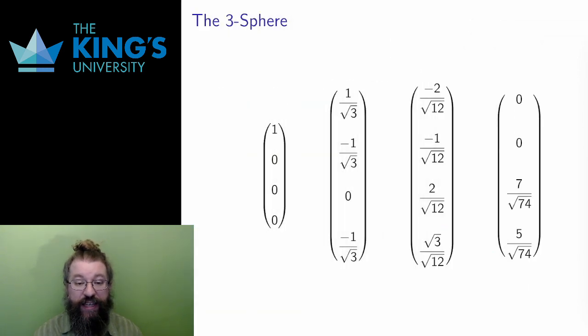With algebraic access, I can actually work with this sphere, talk about it. Consider these four vectors in R4. If I take the components of these vectors, square them, and add them up, I get exactly 1. In the first, this is just 1 plus 0 plus 0 plus 0 equals 1. In the second, the squares are all 1 thirds, and adding up 3 thirds is 1.